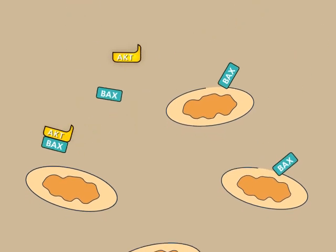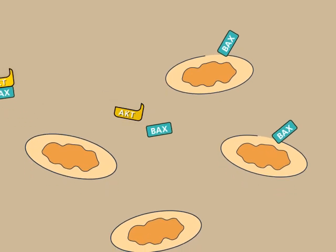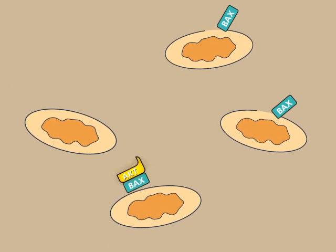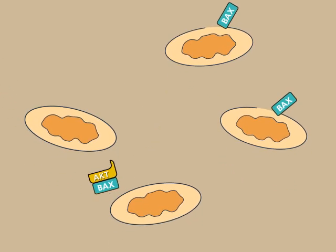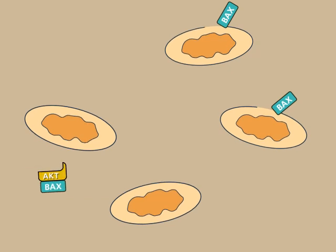AKT binds to BAX and hinders its ability to form holes in the outer mitochondrial membrane. In the absence of AKT, these holes lead to apoptosis via the caspase cascade.